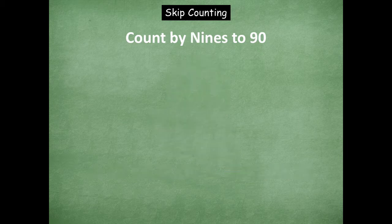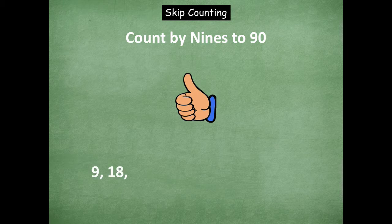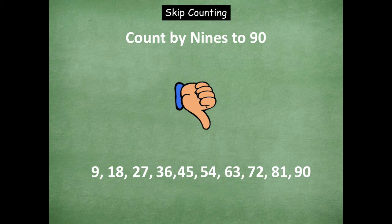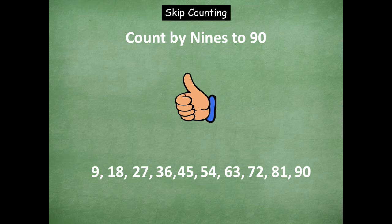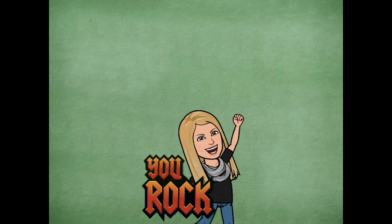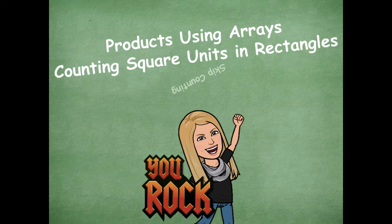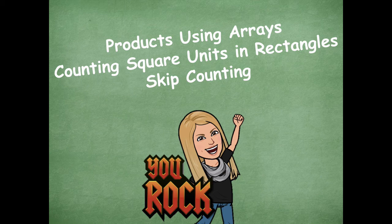Let's end with skip counting by nines. Counting up: nine, eighteen, twenty-seven, thirty-six, forty-five, fifty-four, sixty-three, seventy-two, eighty-one, ninety. Counting down: eighty-one, seventy-two, sixty-three, fifty-four, forty-five, thirty-six, twenty-seven. Counting up: thirty-six, forty-five, fifty-four, sixty-three, seventy-two, eighty-one, ninety. Fantastic job, you guys rocked it! You did a great job using arrays to find products, counting square units in rectangles, and skip counting. Please head back to the module to see what you need to complete next. Let me know if you have any questions — hope you have a great rest of your day. Bye, friends!